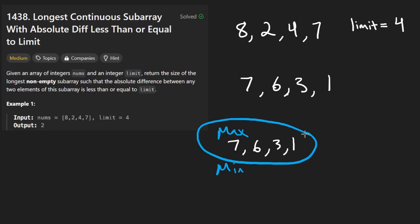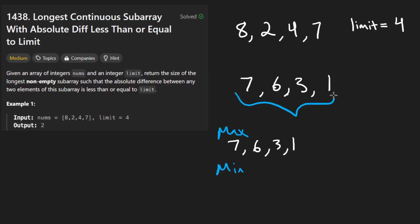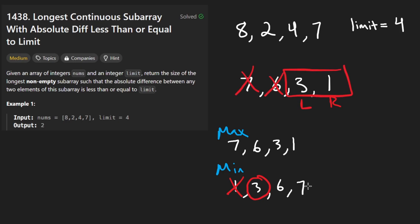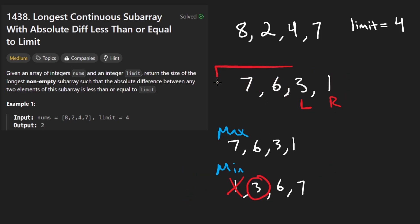Do you see something about this monotonic queue? It's in decreasing order — the values are in decreasing order. So for the minimum queue, would we just do the opposite? Would I put one, three, six, seven? No, because this doesn't make sense. Think about this: we pop one, and then the new minimum becomes three — how would that ever happen? We have a window, we're looking at a continuous subarray. So if this is a queue — a double-ended queue — why would we ever remove seven and six after we have removed one and three? It doesn't make sense.